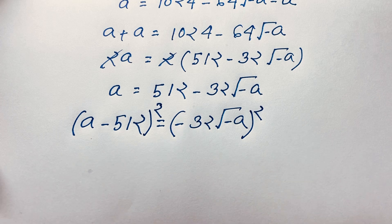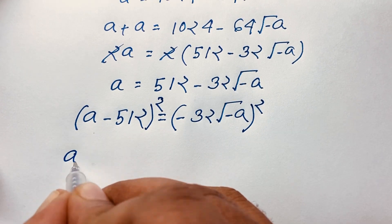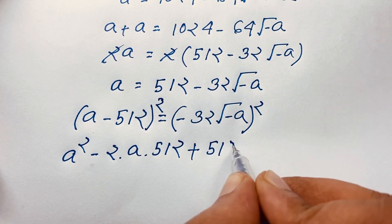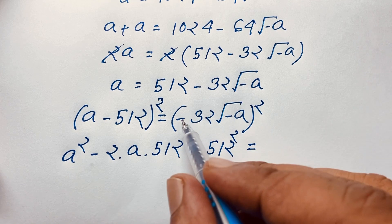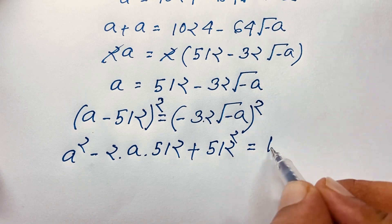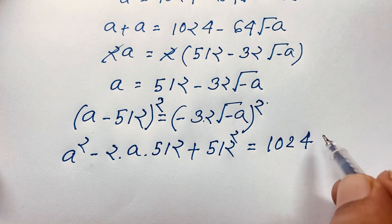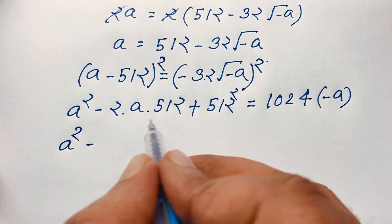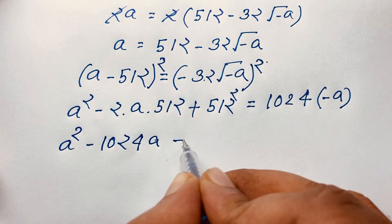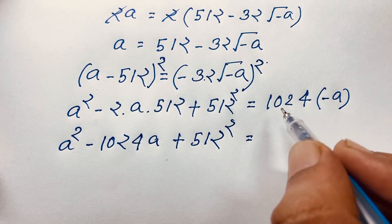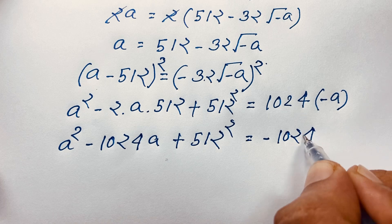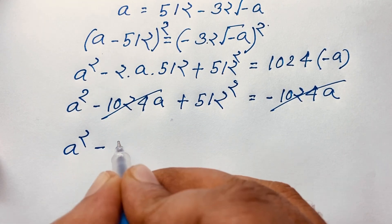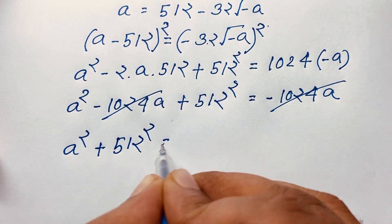Using (A minus B) squared equals A squared minus 2AB plus B squared, we get A squared minus 2 times A times 512 plus 512 squared, which is 1024A, equals negative 32 squared times negative A. Since it is an even power, it will be positive: 32 squared times negative A gives negative 1024A. The 1024A terms cancel out, and we find A squared plus 512 squared equals 0.